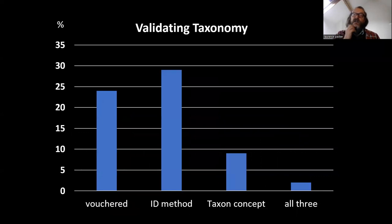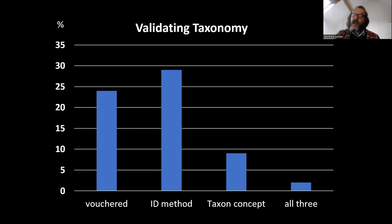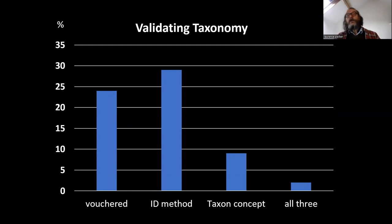When we look at all three — and all three are required to make the work replicable — somebody can check whether you identified the specimens correctly if they can access your specimens; people can use the same method of identification as you did if you said how you identified them; and if you say what taxon concept you used, people can check whether that has changed since you did the work. One in 50 of the research articles published in 2016 did all three.